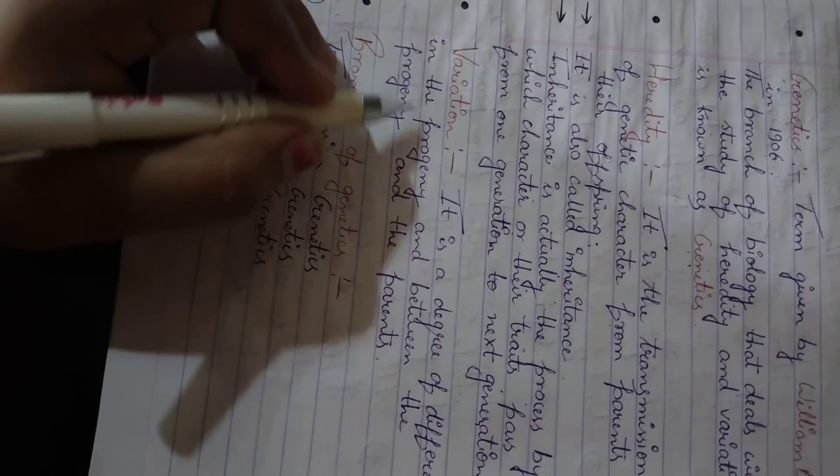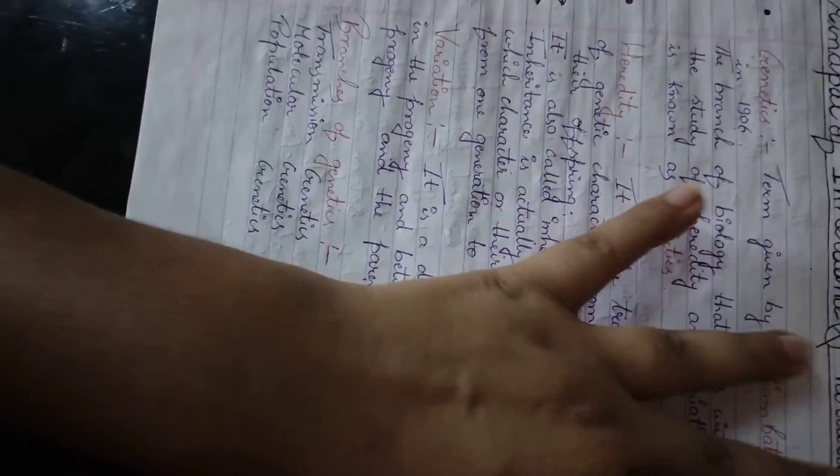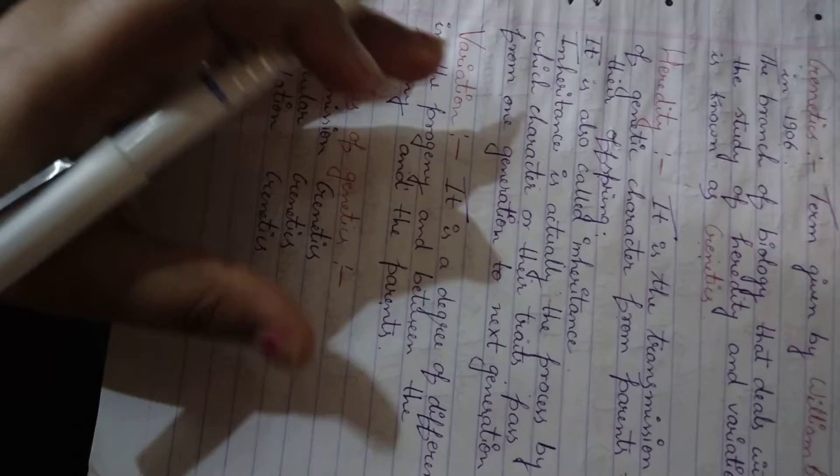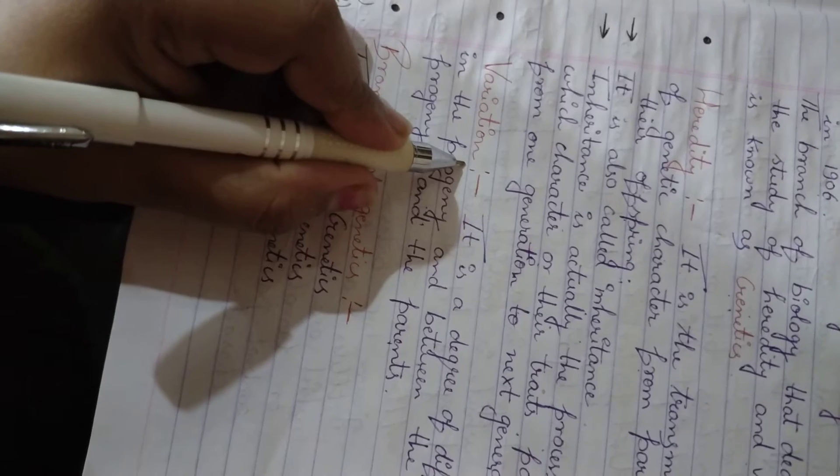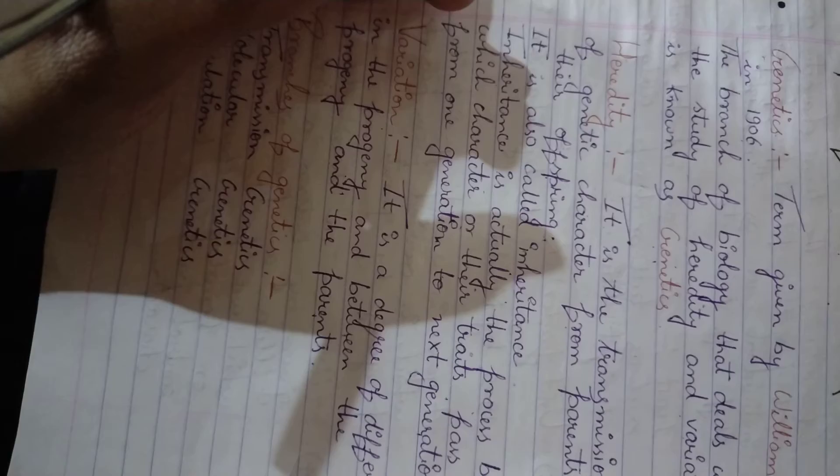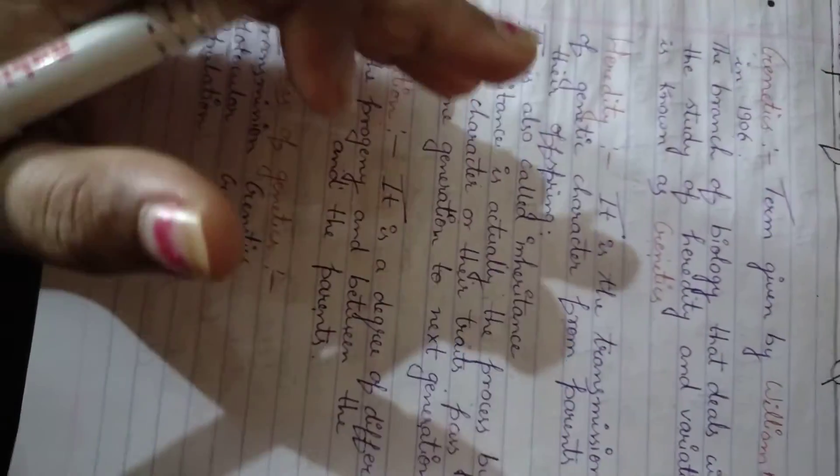Next is variation. So it is the degree of difference in the progeny and between the progeny and the parents. I have already explained about the variation but there is a definition here. It is a degree of differences in the progeny. So it is the difference between parents and progeny. What do we call it? We call it variation. Inheritance means similarities which are transferred from one generation to another generation. And what is the variation? The differences from one generation to another generation.